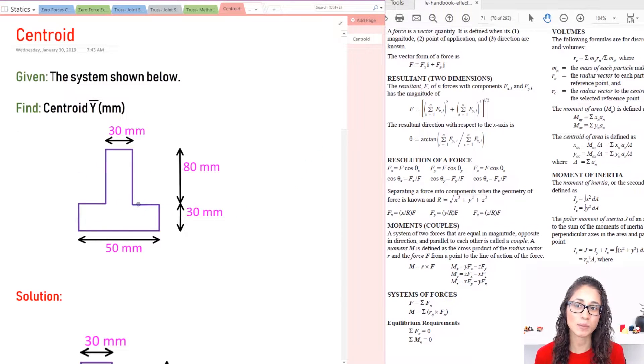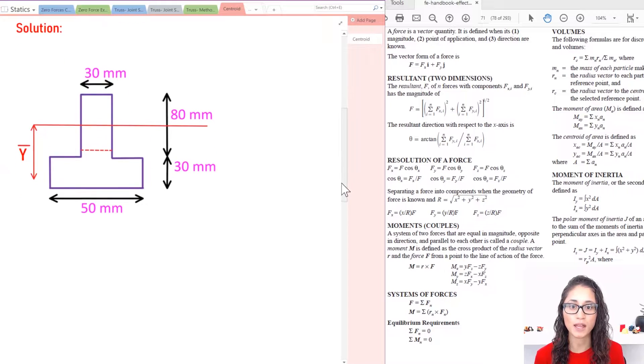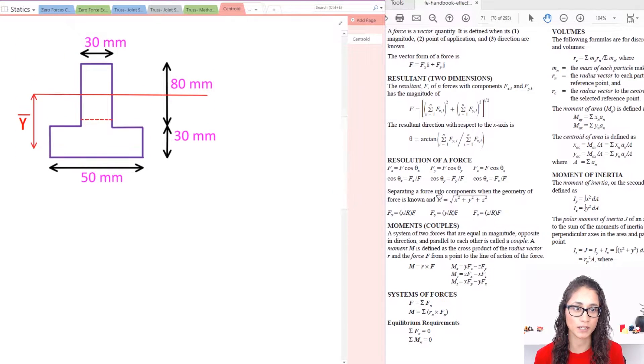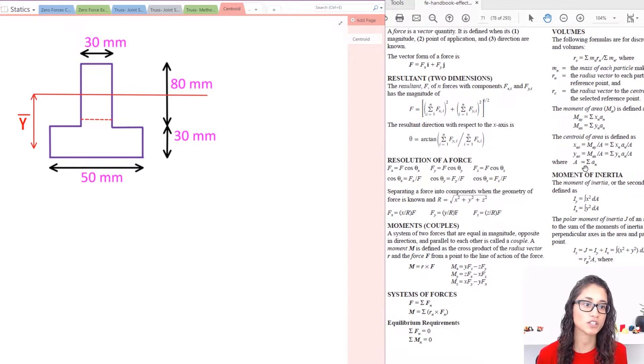Okay guys, so we're given this system and we need to calculate the centroid Y-bar. So let's go to page 71 on the reference manual and get the equations and write it down. So here we have the equation: Y-bar is equal to the summation of Yn times An over A. So I'm going to write it down and then we'll explain what each term means.